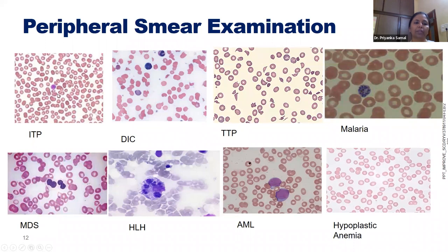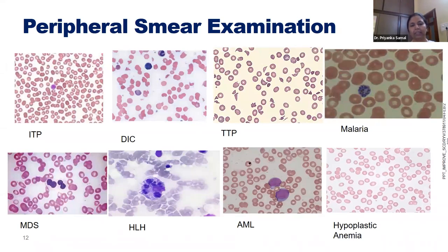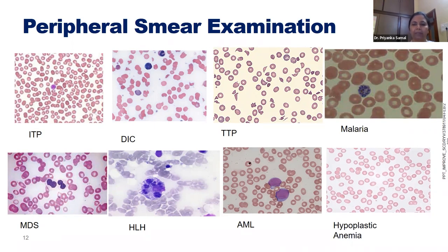In ITP on smear, platelets are almost absent but single giant platelets may be visible — these giant platelets are very active, which is why ITP patients do not bleed even at counts less than 5,000. In DIC, you can see fragmented cells. In TTP, hemolysis is evident with schistocytes. DIC and TTP look similar, but in DIC you may see toxic granulation and WBC changes because patients usually have associated sepsis.